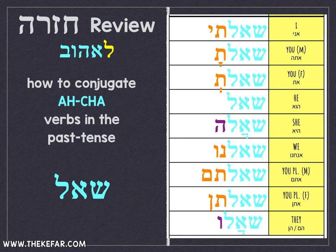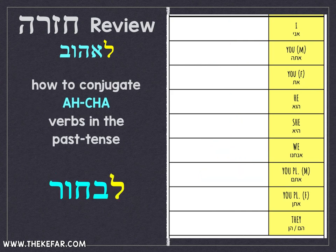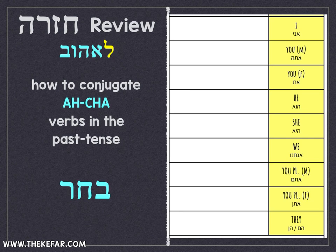We have an additional 'a' sound in the middle because these are acha verbs. The next verb was livchor, which is 'to choose.' Our shoresh is bachar. Remember that if you have one of the softer letters as the beginning letter of the shoresh — like veit, haf, or fe — when conjugating, if it remains the first letter of the word, you switch it to the harder version: veit becomes bet, haf becomes kaf, fe becomes pe, because we don't use veit, fe, or haf as beginning letters of words. So hu bachar — he chose — that's the shoresh.